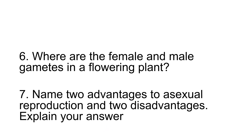Where are the female and male gametes in a flowering plant? Number seven: Name two advantages of sexual reproduction and two disadvantages. Explain your answer.